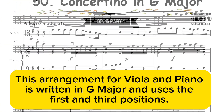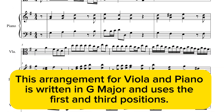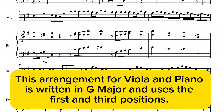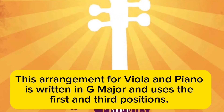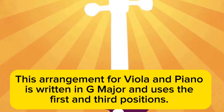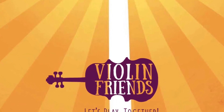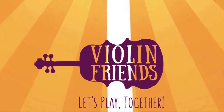This arrangement for violette and piano is written in G major and uses the first and third positions. Let's play together!